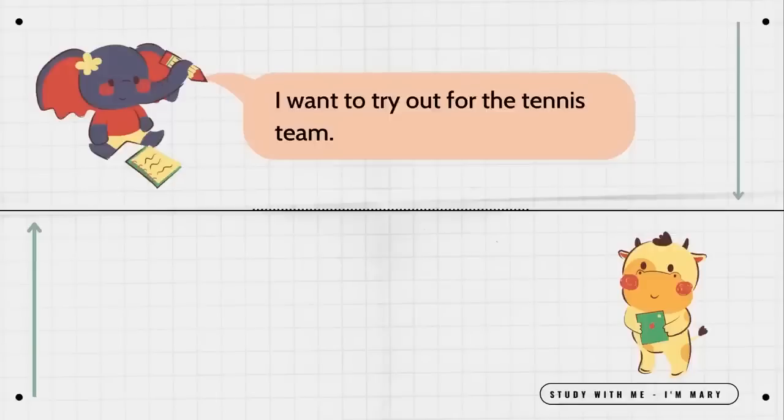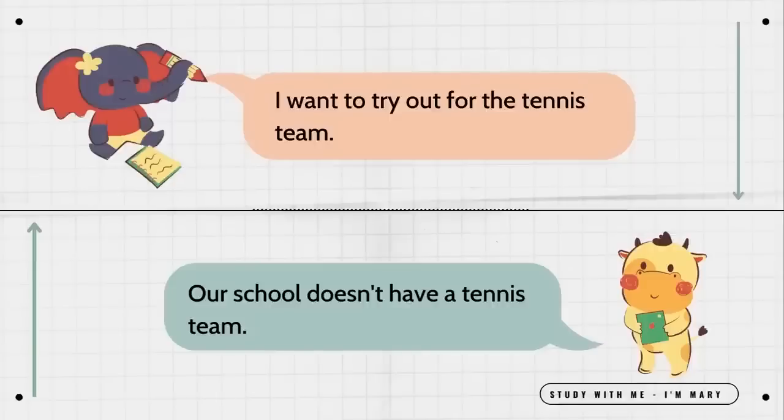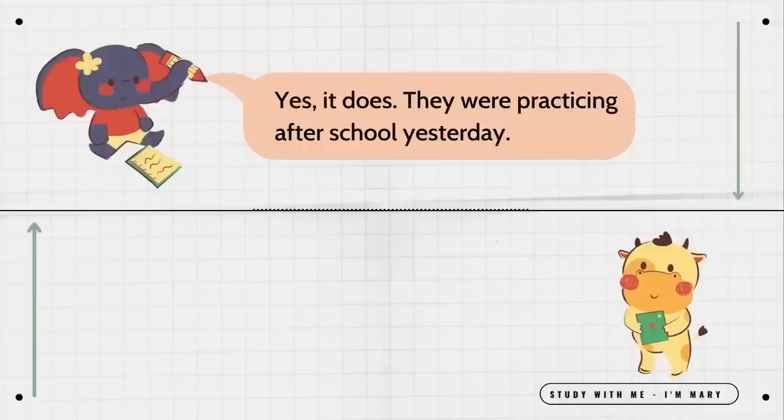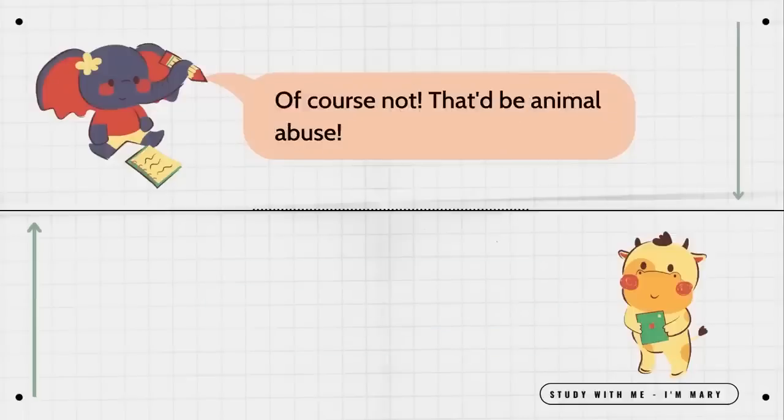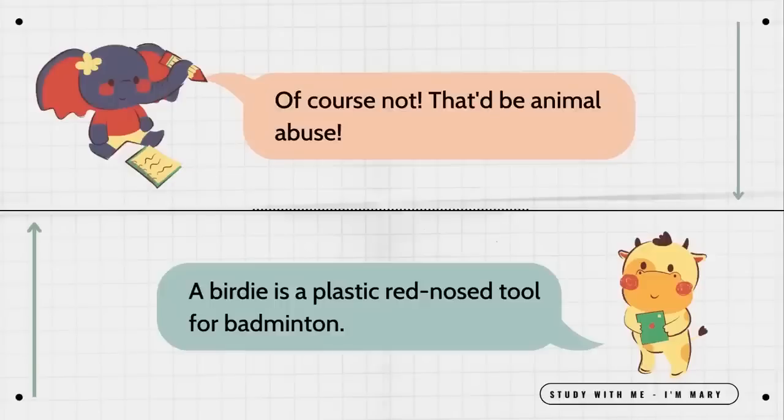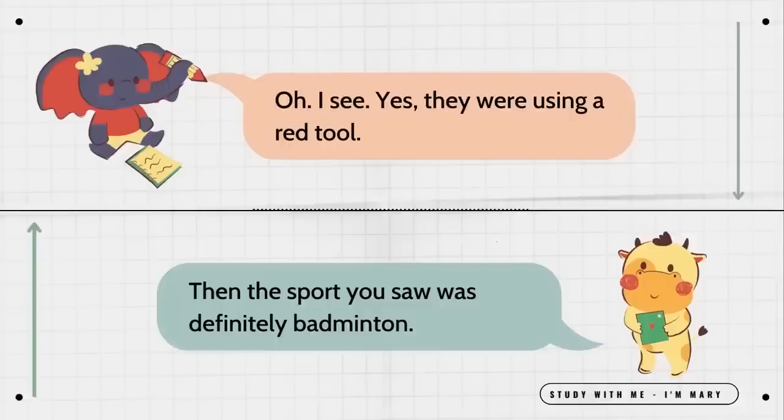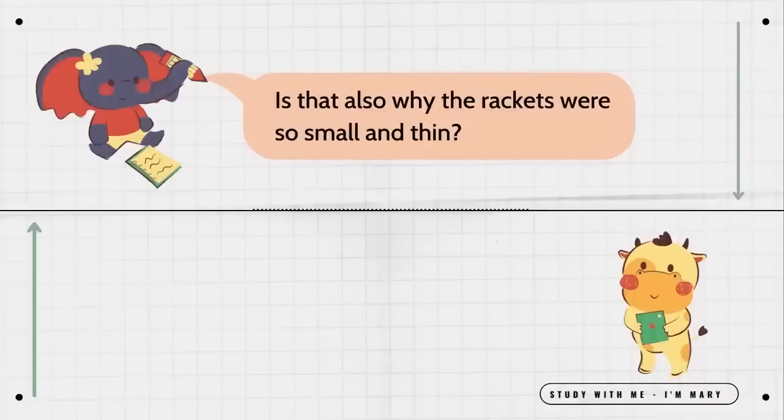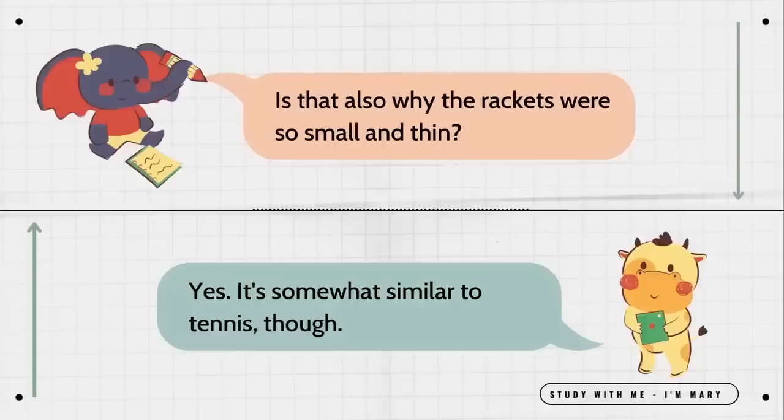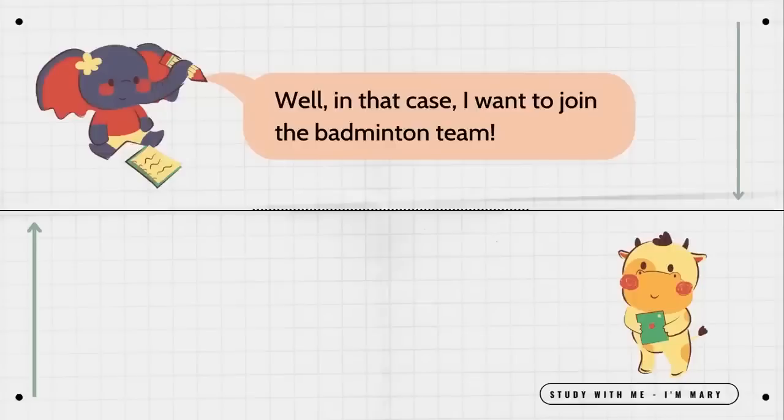I want to try out for the tennis team. Our school doesn't have a tennis team. Yes it does. They were practicing after school yesterday. Were they using a birdie? Of course not. That would be animal abuse. A birdie is a plastic red nose tool for badminton. Oh, I see. Yes, they were using a red tool. Then the sport you saw was definitely badminton. Is that also why the rackets were so small and thin? Yes, it's somewhat similar to tennis though. Well, in that case I want to join the badminton team. I wish you the best of luck.